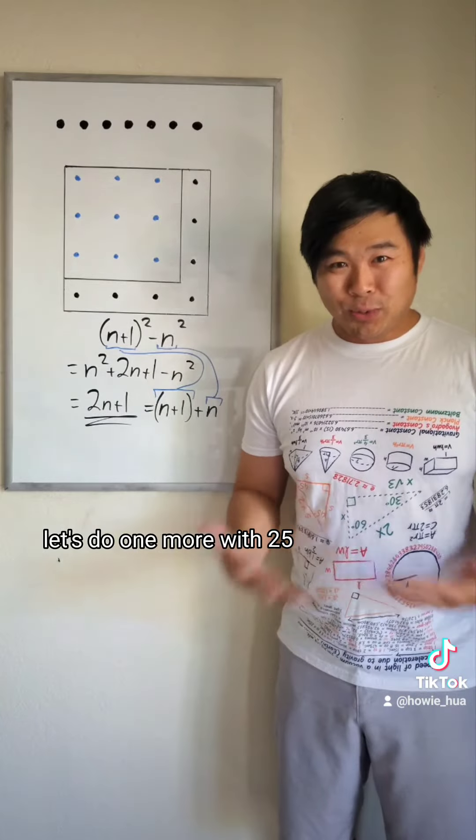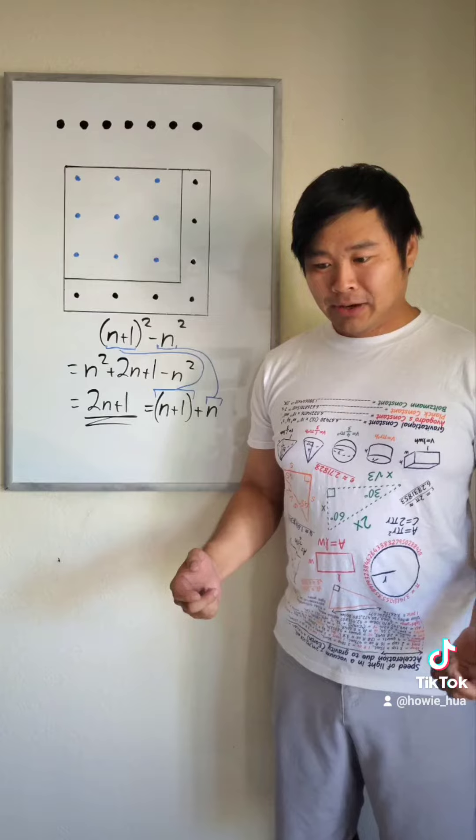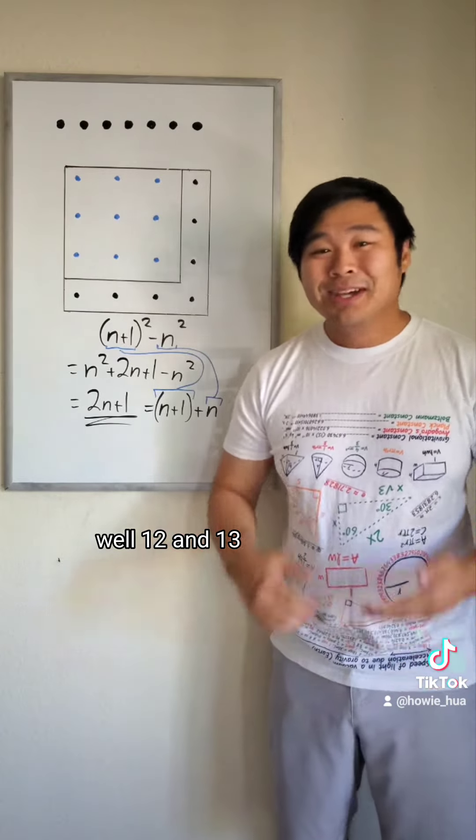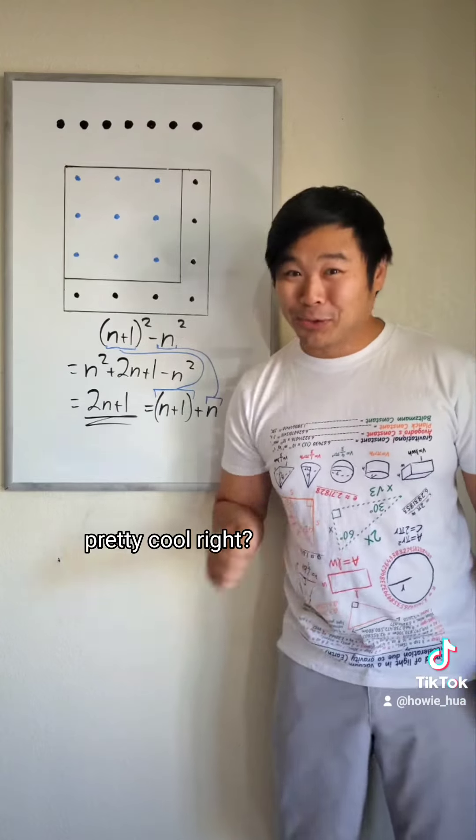Let's do one more. With 25, what two consecutive numbers add up to 25? Well, 12 and 13. So 25 is 13 squared minus 12 squared. Pretty cool, right?